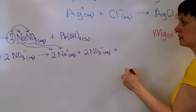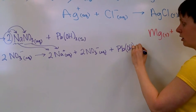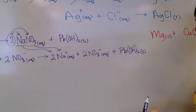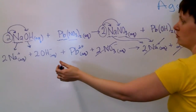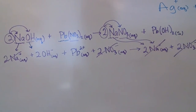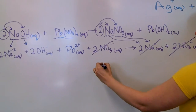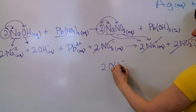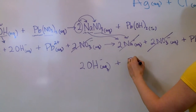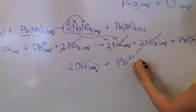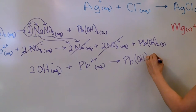Solids, liquids, and gases just get copied in. PbOH2, no charge, just solid. Cancel out what we see on both sides of the arrow — we're going to cancel out our two nitrates and our two sodiums. Then we rewrite everything to go from our complete ionic equation to our net ionic equation, which is: two hydroxide ions aqueous plus lead two positive ion aqueous will give us Pb(OH)2 solid.